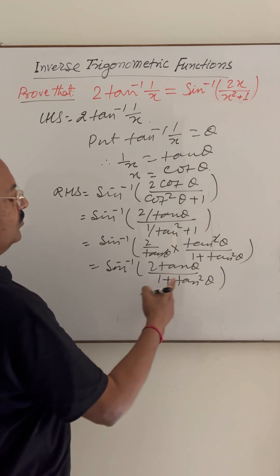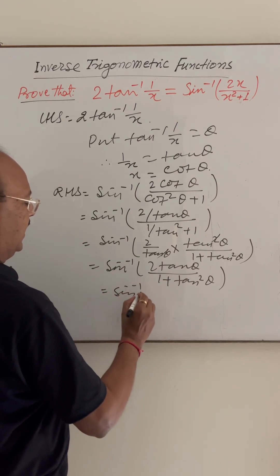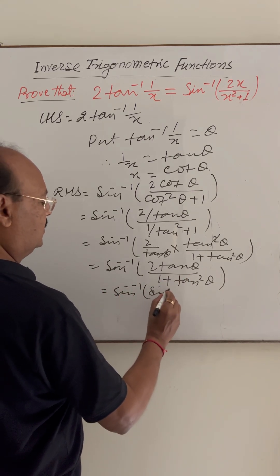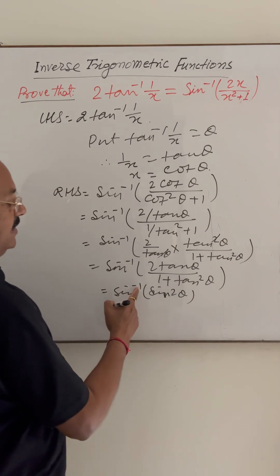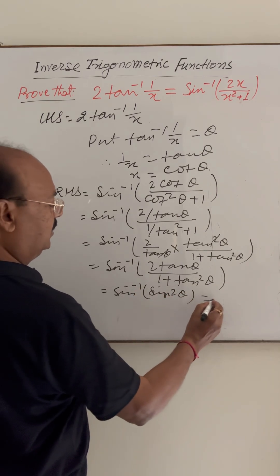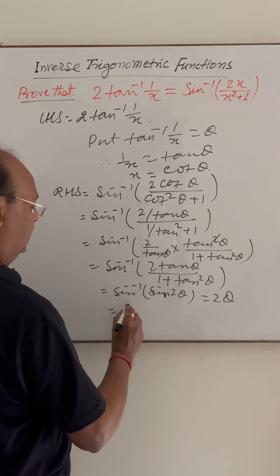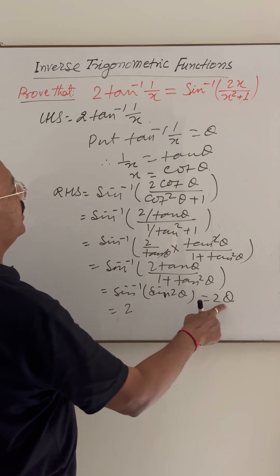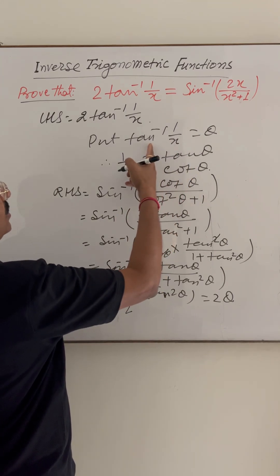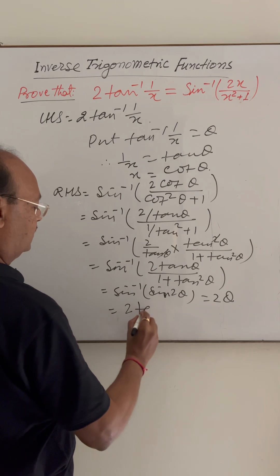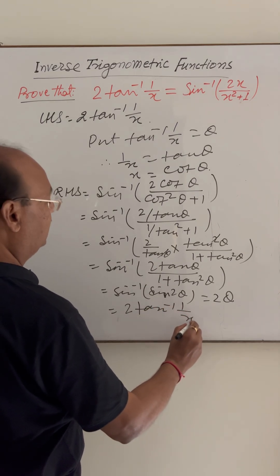And this is the formula for sin 2 theta. So this is sin inverse of sin 2 theta, and sin inverse of sin 2 theta is equal to 2 theta. Now 2 theta is 2 into theta. Here we had supposed theta is tan inverse of 1 by x, so this gives 2 tan inverse of 1 by x.